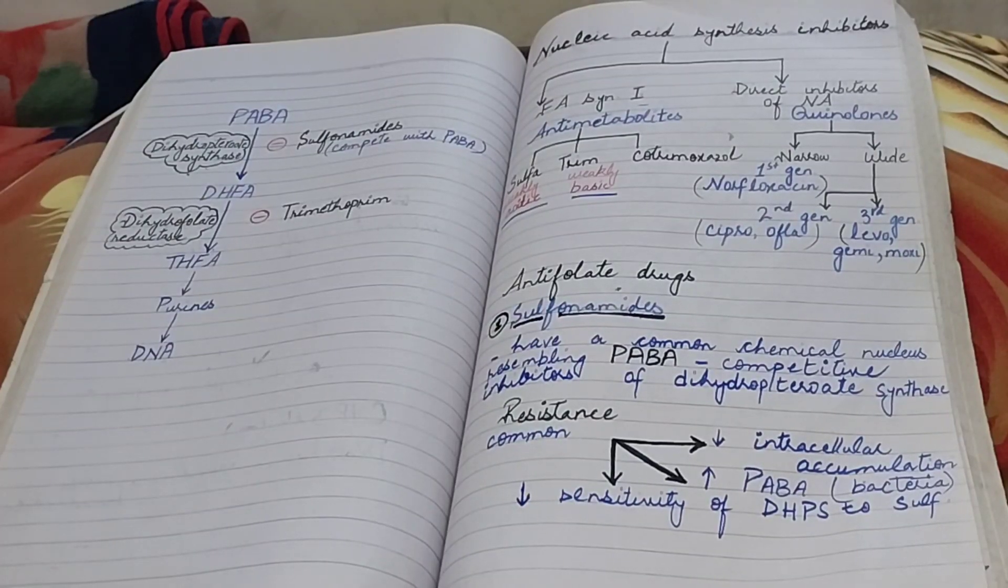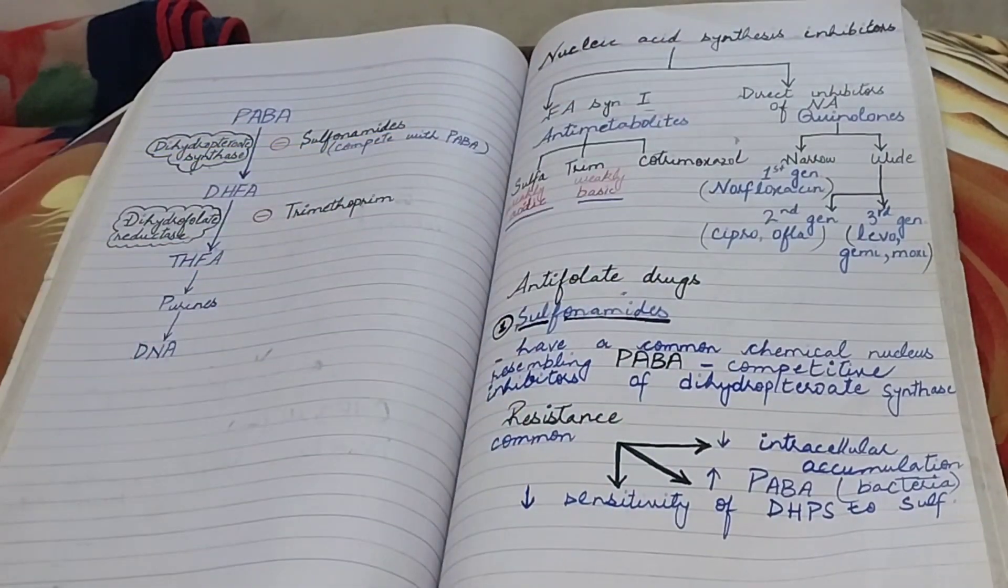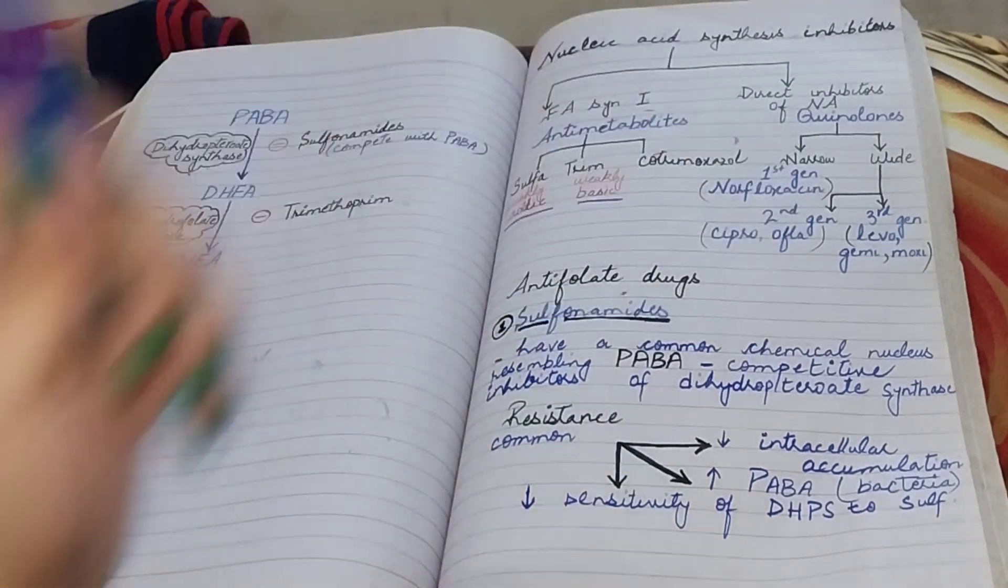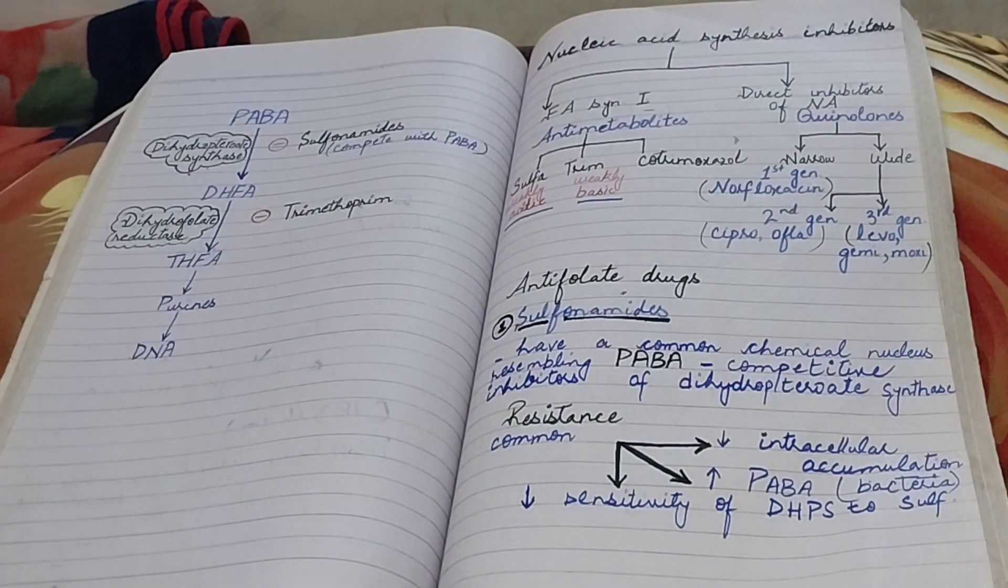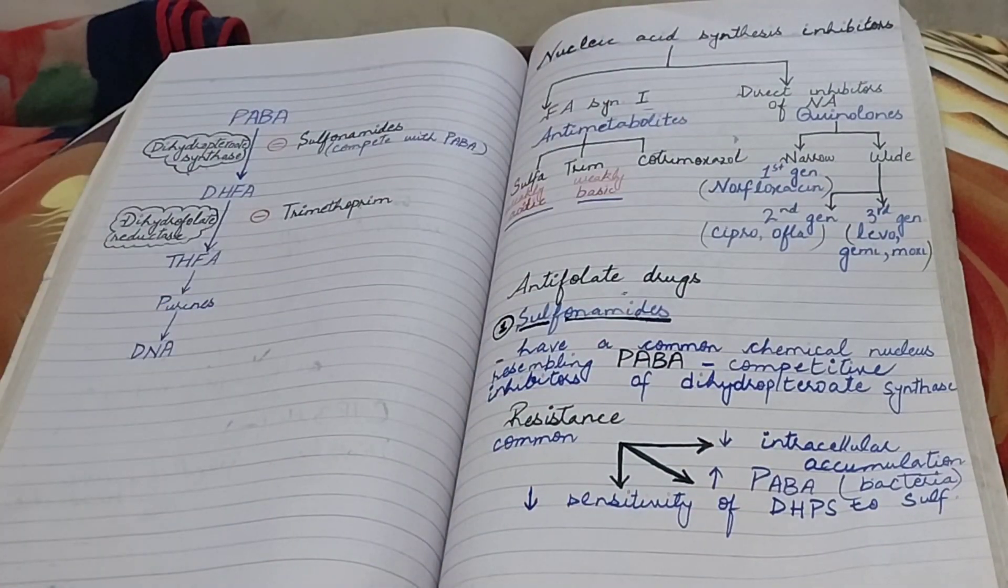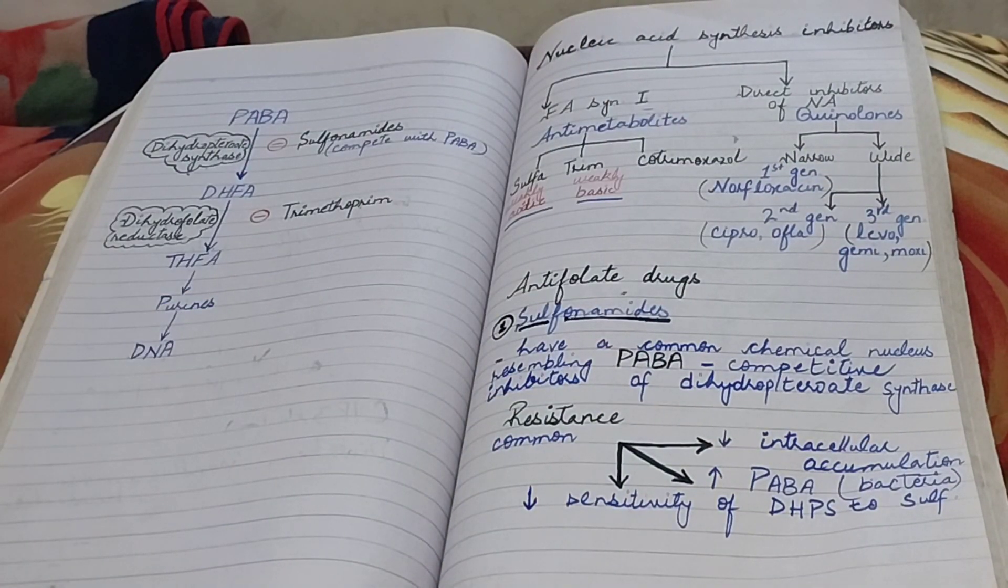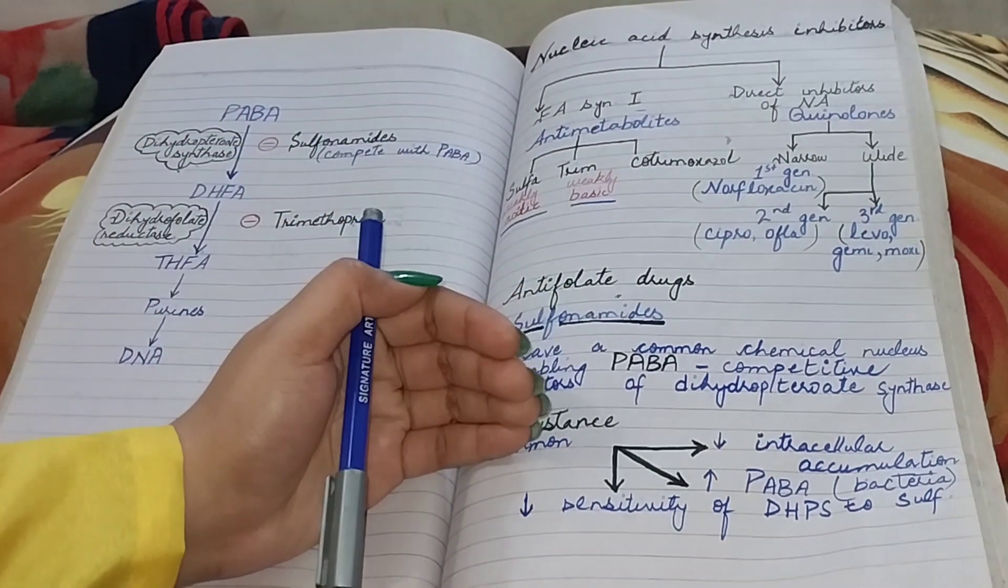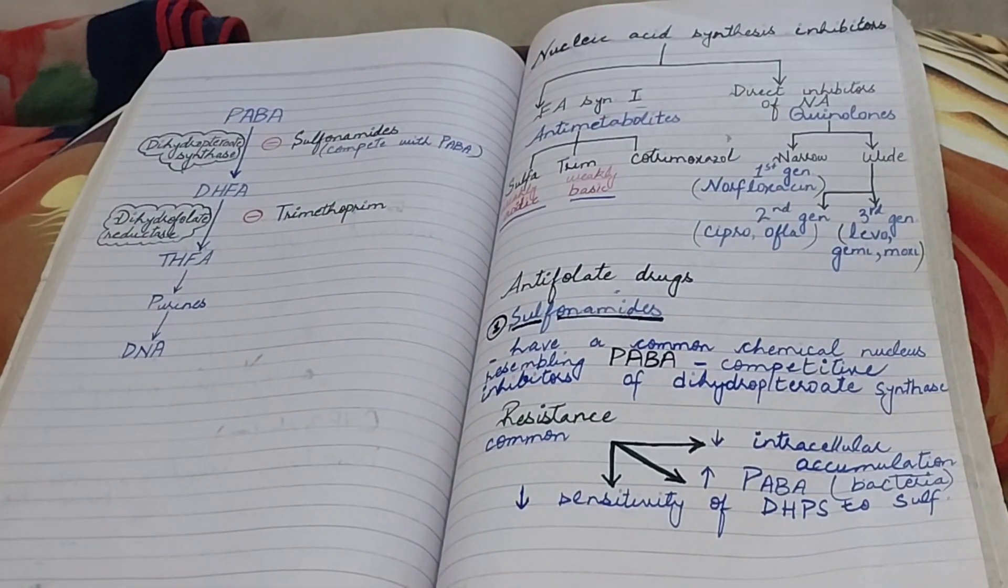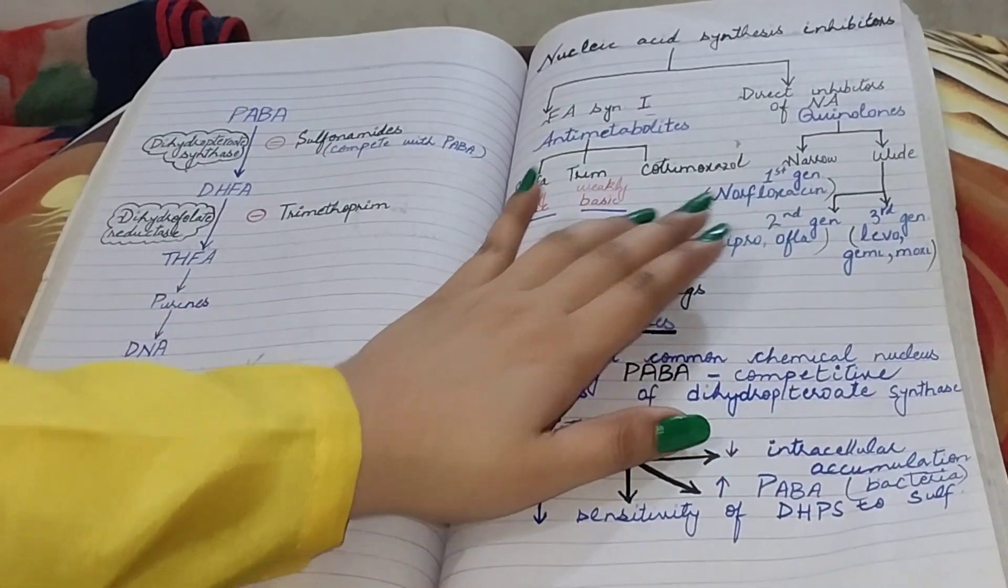Assalamu alaikum, we are talking about nucleic acid synthesis inhibitors. We have already discussed folic acid synthesis inhibitors, now it's time to see direct inhibitors of nucleic acid that are quinolones. Quinolones can be divided into narrow spectrum and wide spectrum quinolones. Like cephalosporins, quinolones are classified by their generation based on their antimicrobial spectrum of activity.